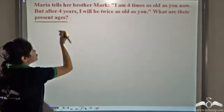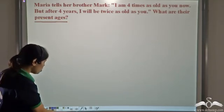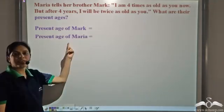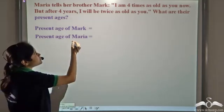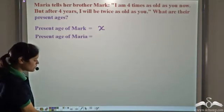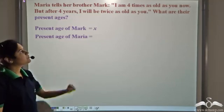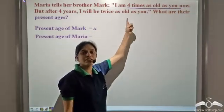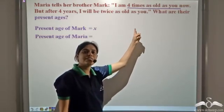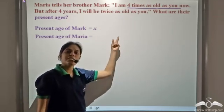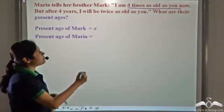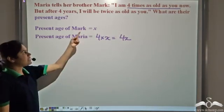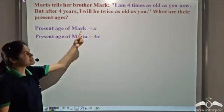The present ages of Maria and Mark are the unknown values, so we need to represent them using variables. Let us assume that the present age of Mark is x. Since Maria is four times as old as Mark — here 'I' stands for Maria and 'you' stands for Mark — Maria's present age will be 4x. So the present ages are x and 4x.